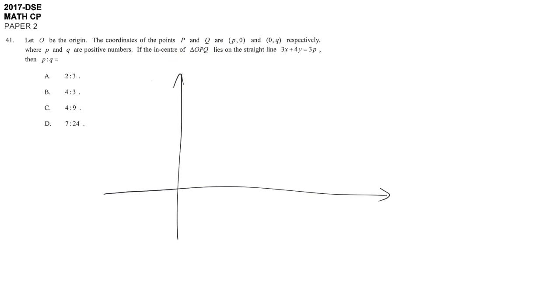They say both P and Q are positive. Point P is at (P, 0), somewhere here on the x-axis. And there is a point Q at (0, Q) on the y-axis, so the height here is Q.